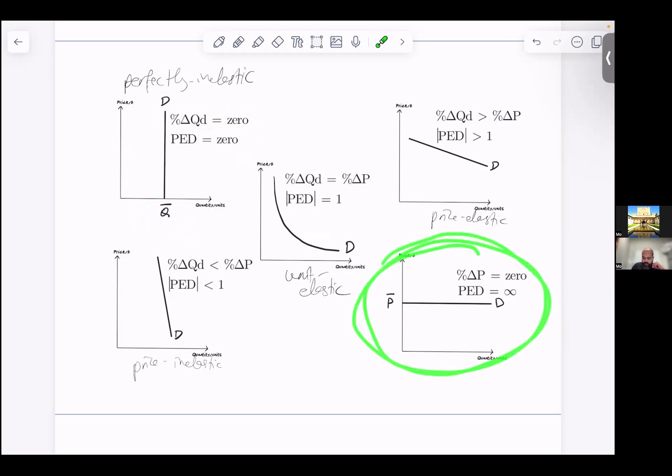And then on the opposite end of the spectrum, what if price is fixed? Anything divided by zero, because the percentage change in price will be zero, anything divided by zero is infinity. PED will be equal to infinity, and the curve will be horizontal.